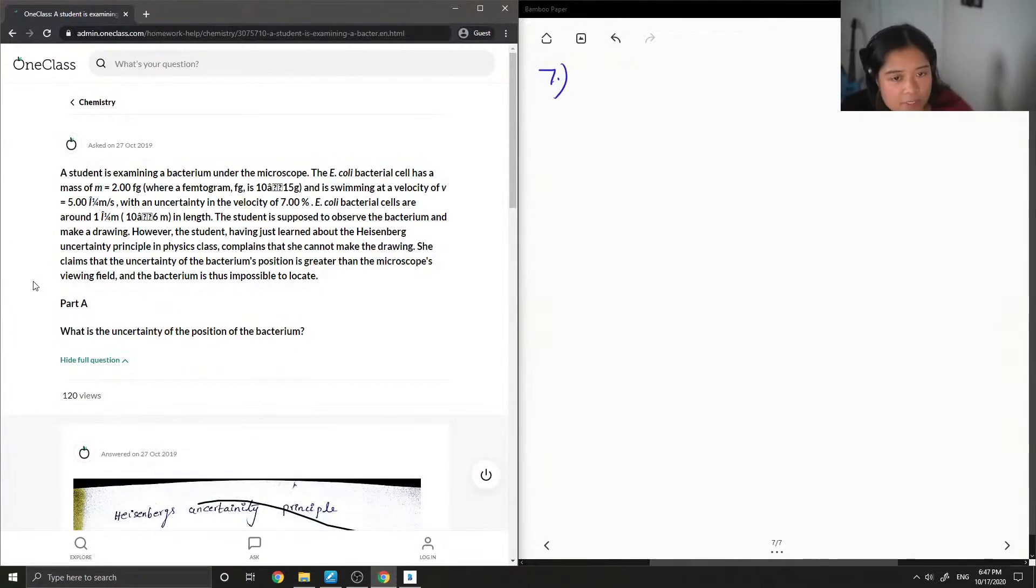The student is examining a bacterium under the microscope. The E. coli bacterial cell has a mass of m equals 2 femtograms, and then they do the conversion to grams, and assuming at a velocity of v equals 5 meters per second, with an uncertainty in the velocity of 7%. E. coli bacterial cells are around 1 times 10 to the 6th in length.